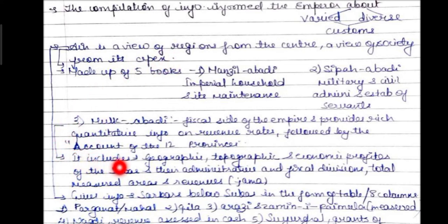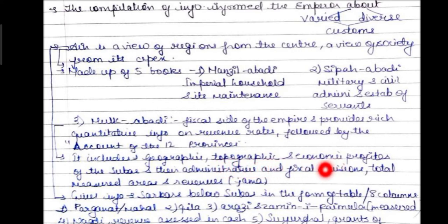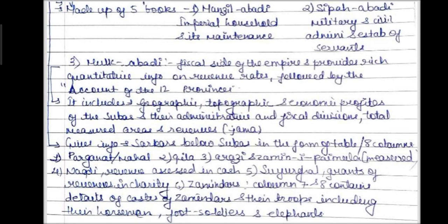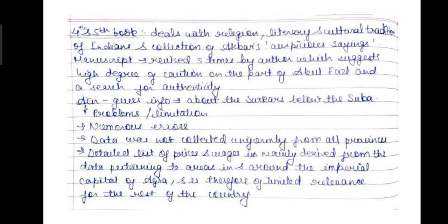This gives information about the government below the subas, in the form of a table of eight columns. The first book contains details of castes and their troops, including horsemen, foot soldiers, and elephants.